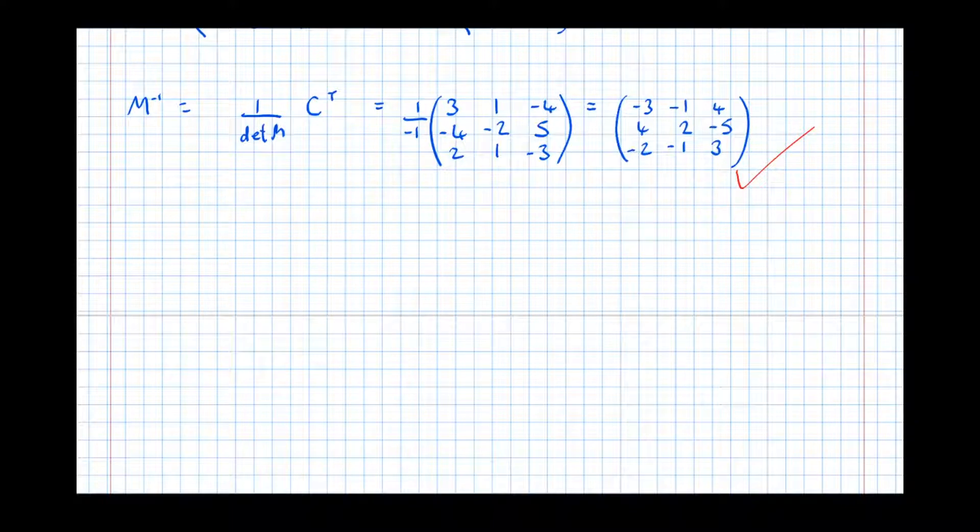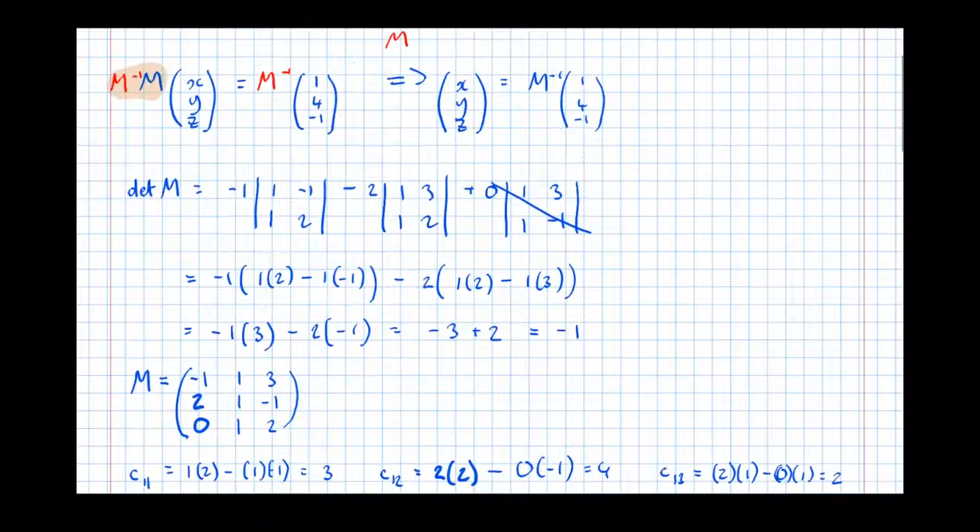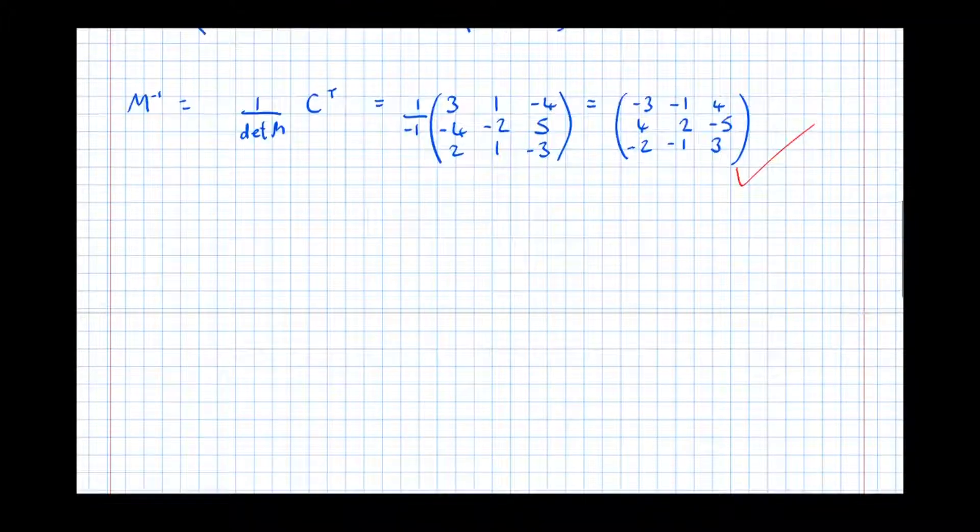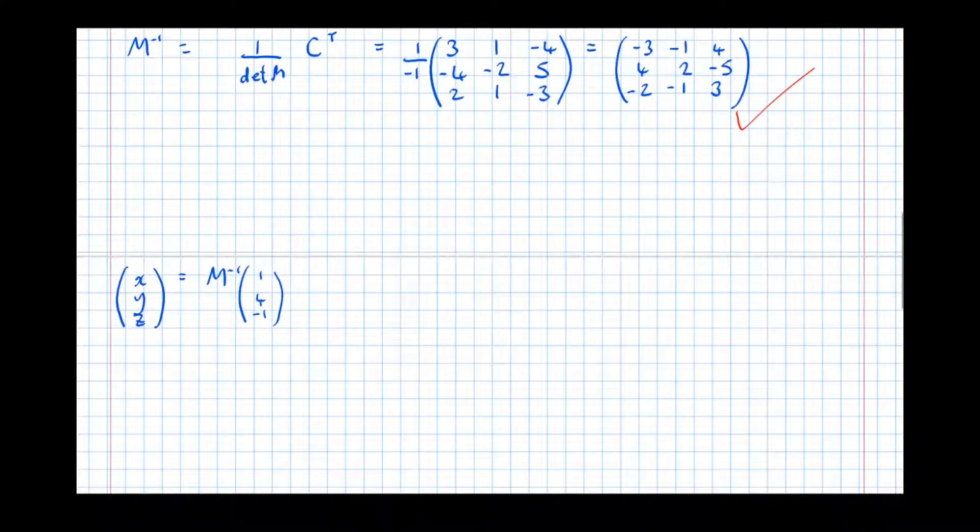Right, so there's the inverse. So we're almost there. So we worked out before that x, y, z was equal to inverse M times 1, 4, -1. So let's go for it.